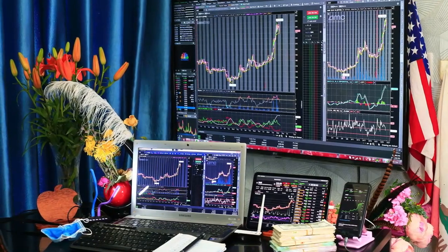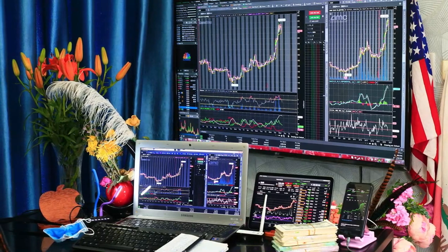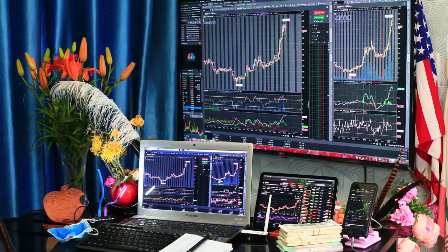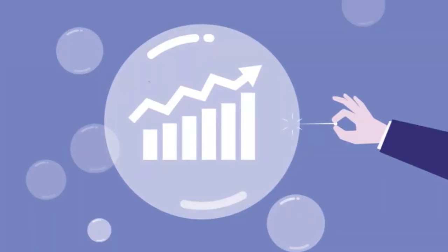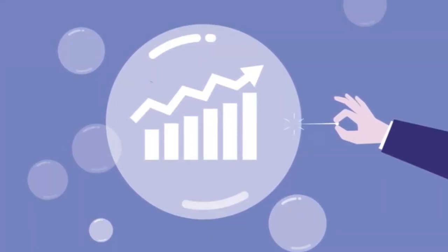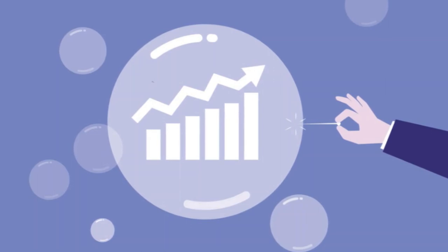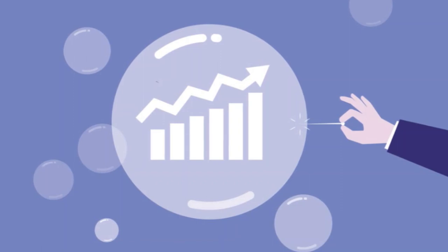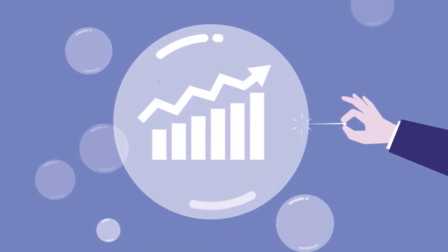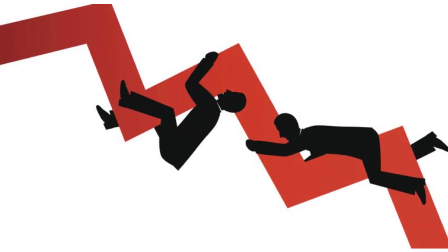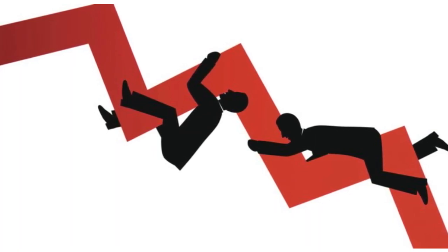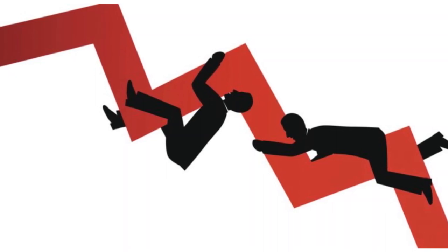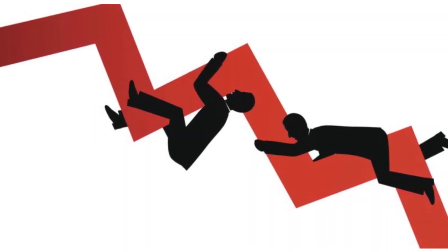Financial or economic bubbles are generated when the price of an asset becomes increasingly high, much higher than the actual value of it. Because of speculative demands rather than intrinsic value, the price of such assets inflates and the bubble eventually pops due to massive sell-offs that cause prices to decline. When financial bubbles pop, they not only destroy wealth but they can also hurt the economy with devastating consequences for those who did not even participate in the activity.